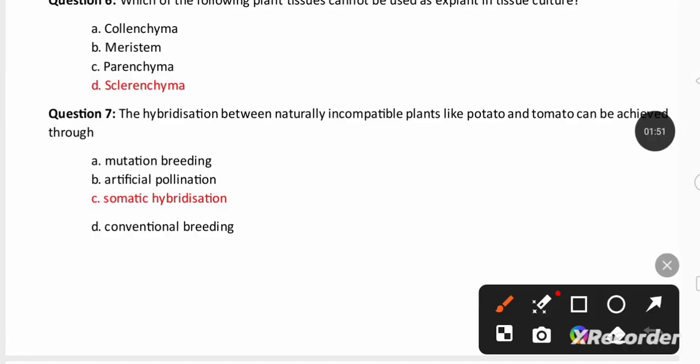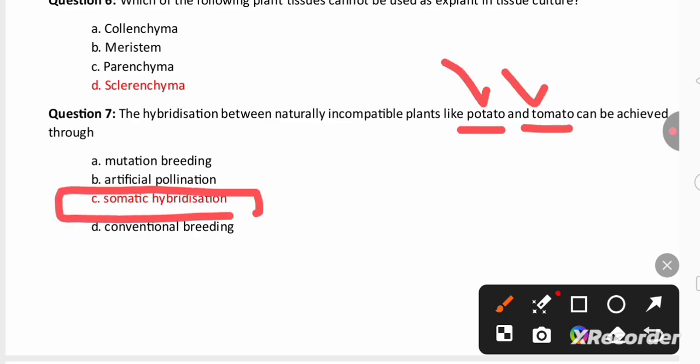Next question in the hybridization between naturally incompatible plants like potato and tomato, when it undergoes hybridization it is going to undergo somatic hybridization because the protoplasm of potato and tomato when fused by using polyethylene glycol it produced a hybrid plant called pomato.